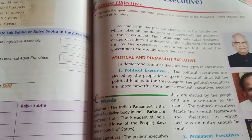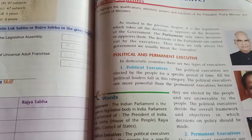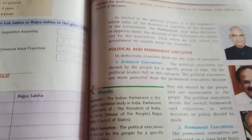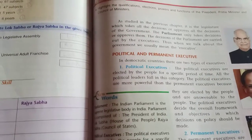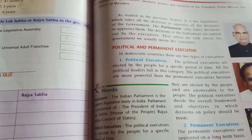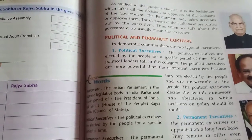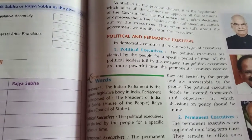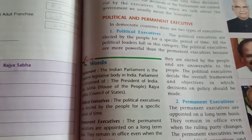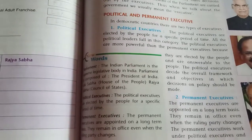These political executives decide the overall framework, objectives, and all decisions on policy. Then, permanent executives are appointed — there is a difference between political and permanent. Political executives are elected by the people for a specific period of time, but permanent executives serve on a long-term basis. They remain in office even when that particular party changes.